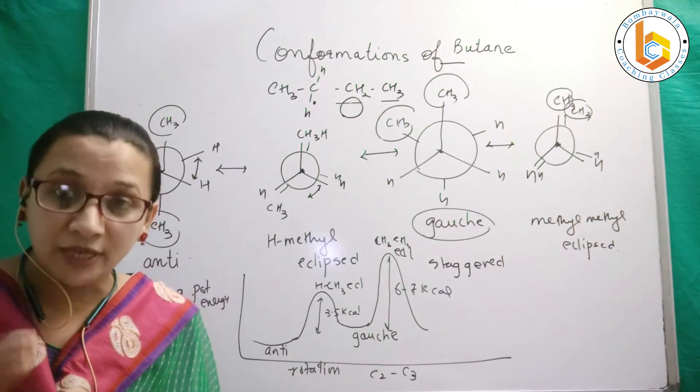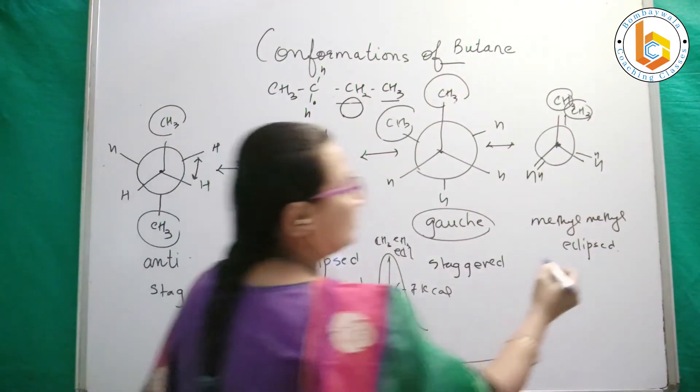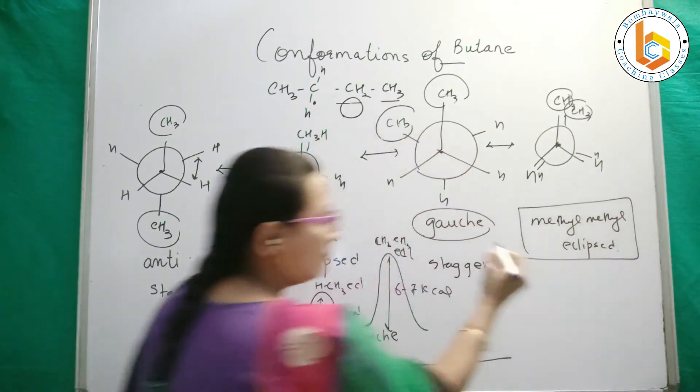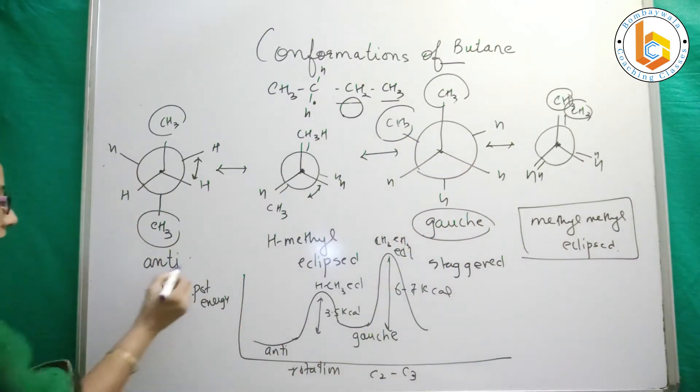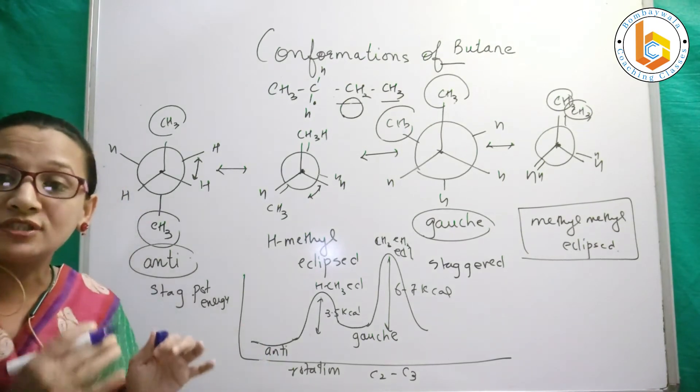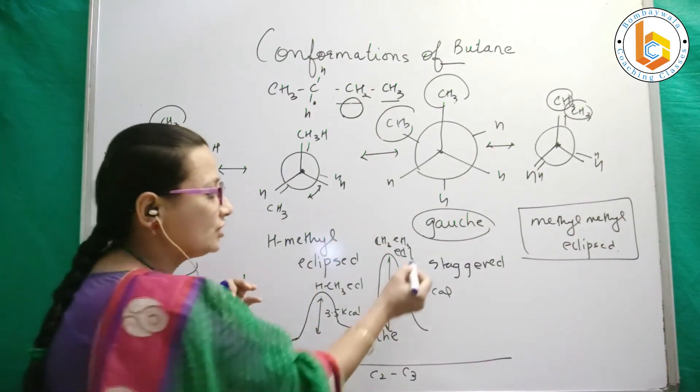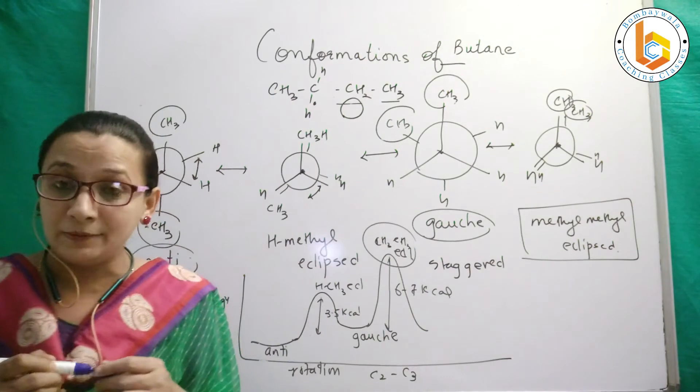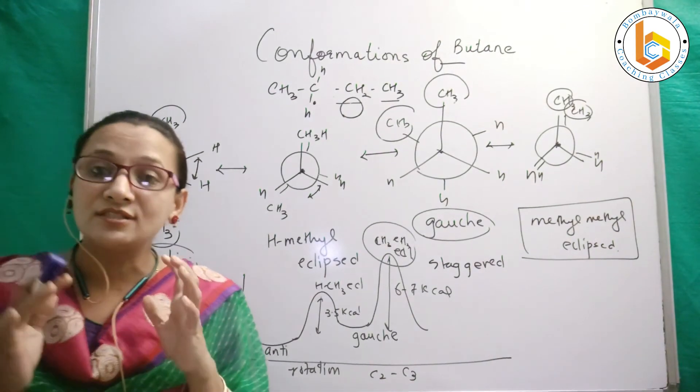So most unstable in butane is methyl methyl eclipsed and the most stable is the anti form. The least energy is most stability and the highest energy, which is your methyl methyl eclipsed, is the least stable.